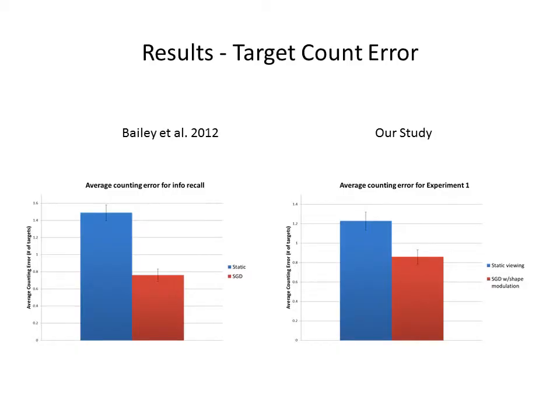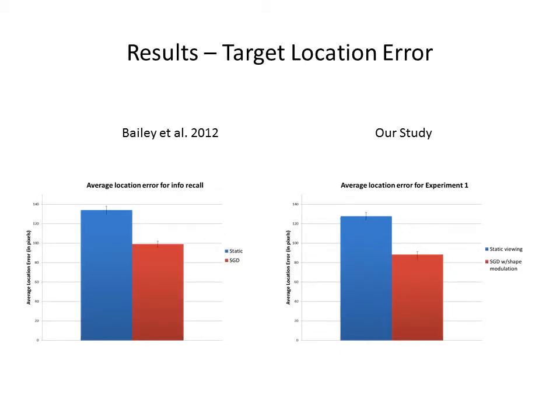We noticed that using SGD with shape modulation, the gaze-guided group had significantly lower count error than that of a static viewing group. Similar results were also observed in the previous study. For location error, SGD with shape modulation shows that the gaze-guided group had significantly lower location error than that of a static viewing group, with similar results observed in the previous study.